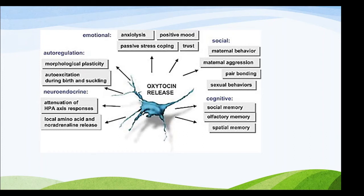Morphological plasticity is a condition where the organism's behavior, morphology, and physiology change in response to a unique environment. Auto-regulation of oxytocin depends on this environmental condition and the morphological changes involved in the organism.